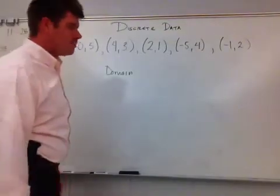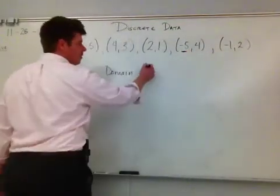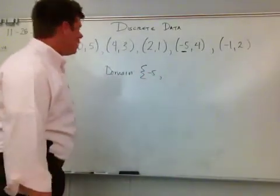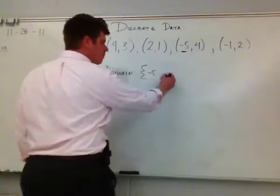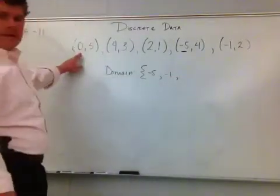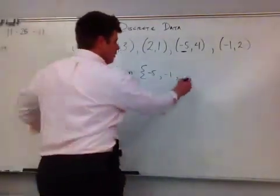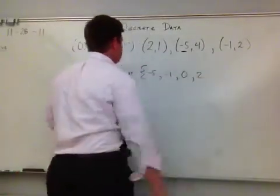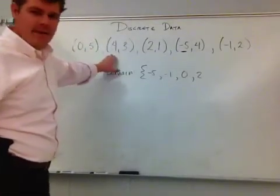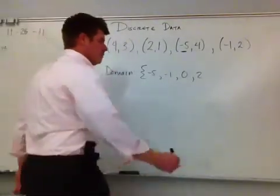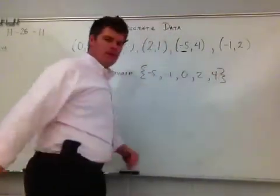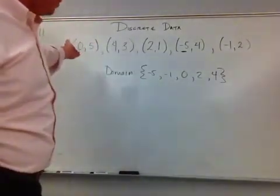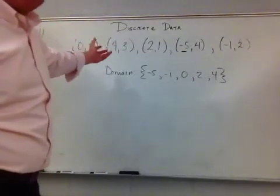I write it from least to greatest. My smallest number is negative 5, so I'm going to put it in a bracket. So, I get negative 5, and then I'm going to look for my next smallest number, which is negative 1. So, negative 1. The next number is 0 here, so I put 0. And then the next number I find is 2. So, I'm writing comma 2. And then last but not least, the greatest x value is 4. So, literally what I've done for the domain is just listed out the x coordinates of my set of data from least to greatest.